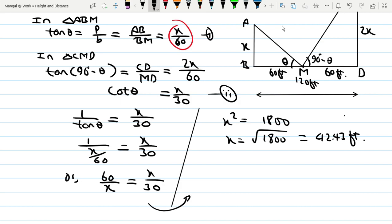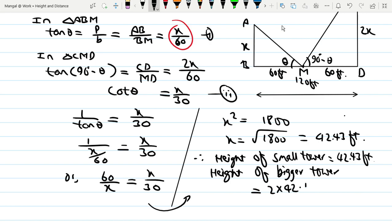Therefore, the height of the small tower equals 42.43 feet. The height of the bigger tower equals 2 times 42.43, which is 84.86 feet.